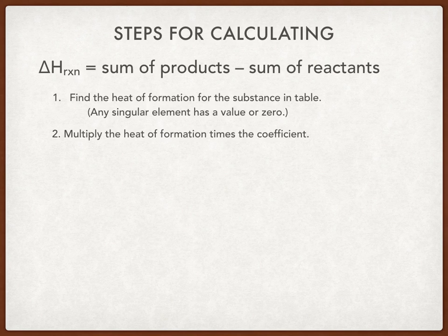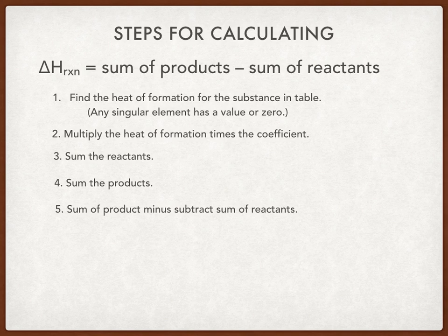You're going to multiply the heat of formation by the coefficient — the sum of the reactants, the sum of the products — and then take the sum of the products minus the sum of the reactants.